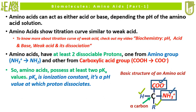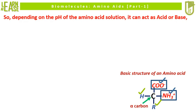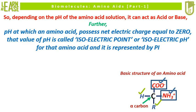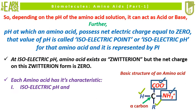Amino acids possess at least two pKa values. pKa is the ionization constant — it is the pH value at which a proton dissociates. Some amino acids possess more than two pKa values, when their R chain possesses a functional group with dissociable protons. So, depending on the pH of the amino acid solution, it can act as acid or base. The pH at which an amino acid possesses a net electric charge equal to zero is called the isoelectric point or isoelectric pH for that amino acid, and it is represented by pI. At isoelectric pH, the amino acid exists as a zwitterion, but the net charge on this zwitterion form is zero. Each amino acid has its characteristic isoelectric pH and pKa values.